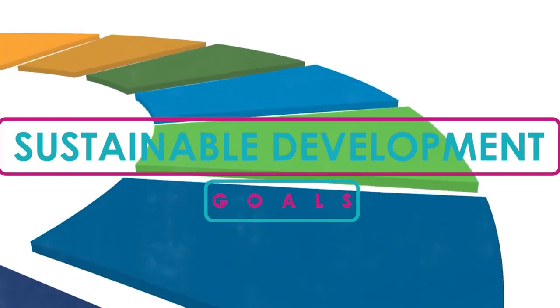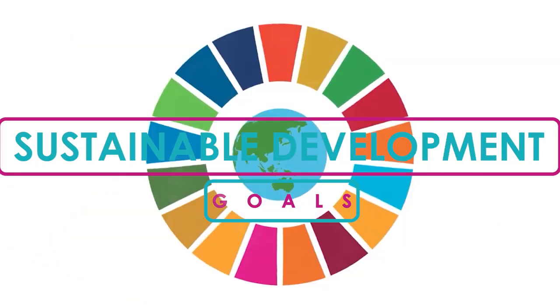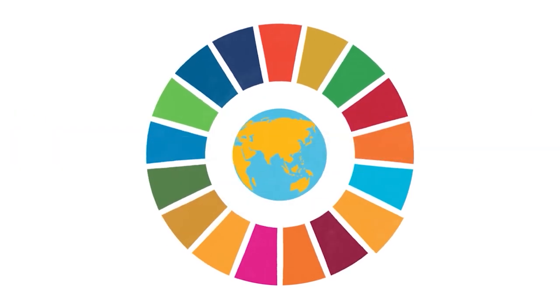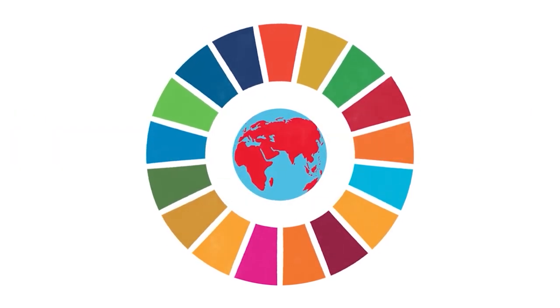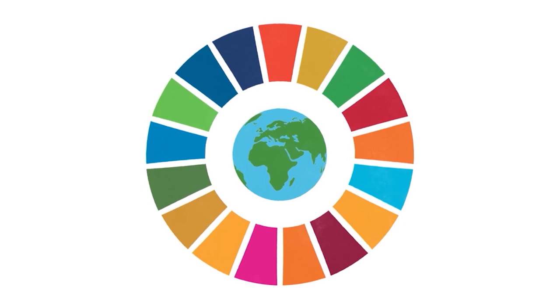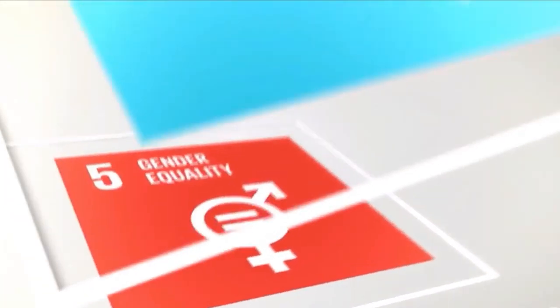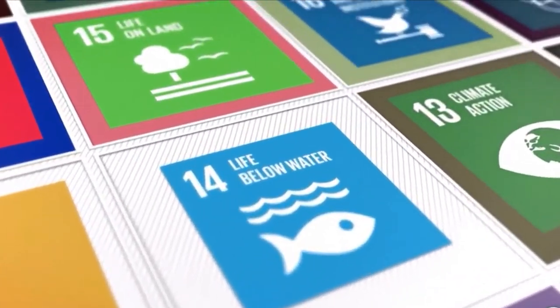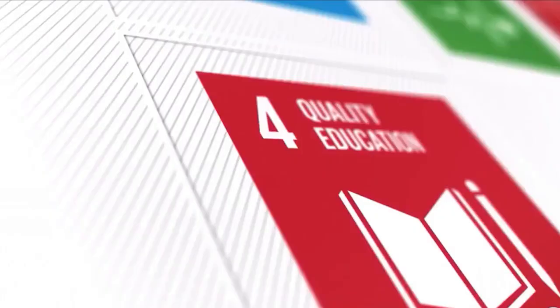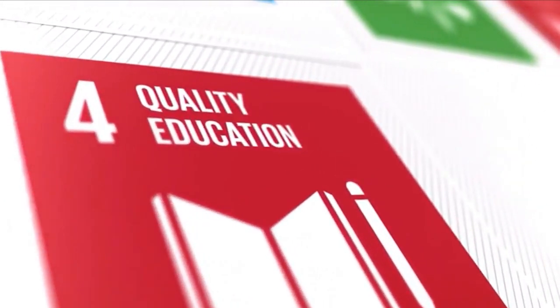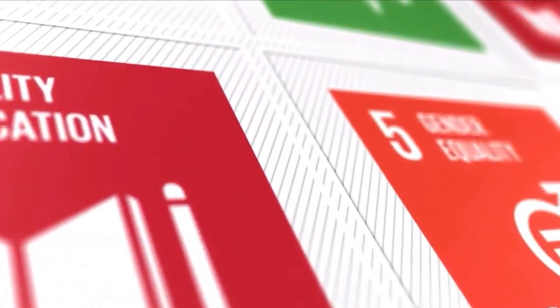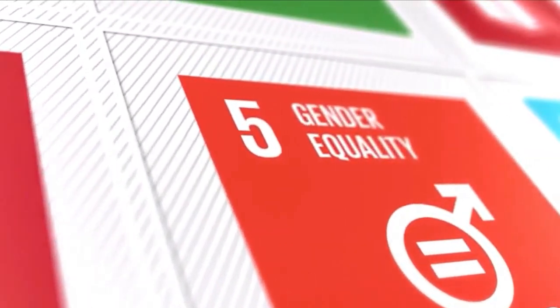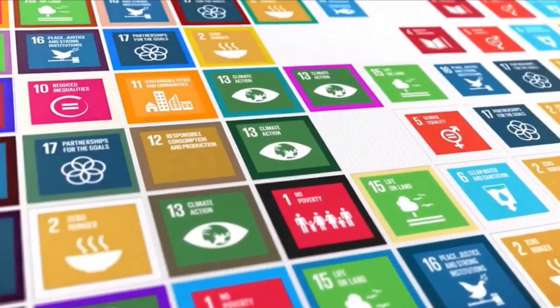You can find your answer in the collection of 17 global goals designed to be a blueprint to achieve a better and more sustainable future for all. The official Sustainable Development Goals 2030 agenda came into force on the 1st of January 2016. Over the next 15 years, the new goals will rely on the previous Millennium Development Goals and intend to complete what they did not achieve by the year 2030.